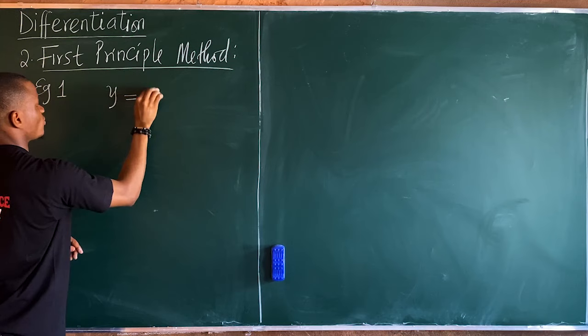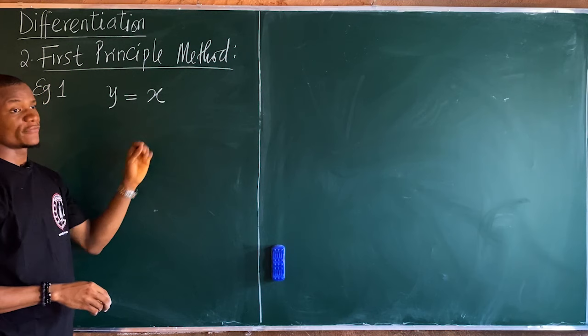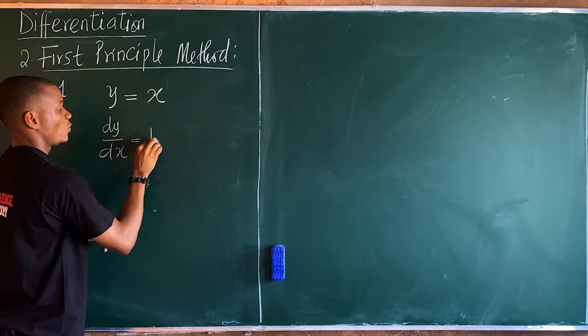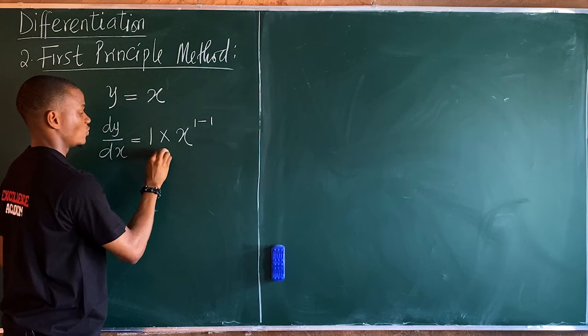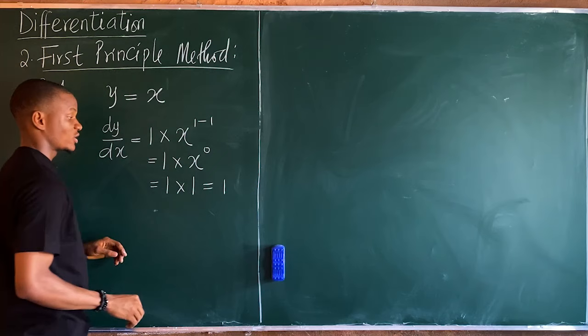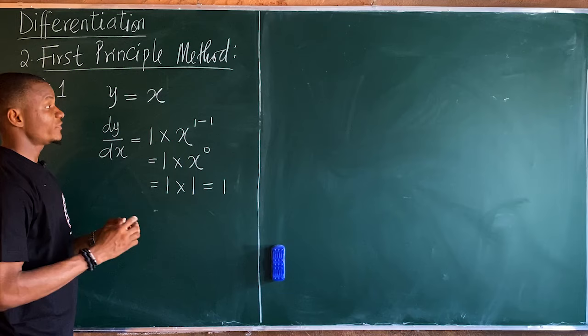Take example one: let's say y equals x. From the general method, dy/dx is equal to — we multiply by the power, the power here is 1, so it becomes 1 times x to the power of 1 minus 1, which is zero, giving us 1 times x to the zero, which equals 1. This is the general method.